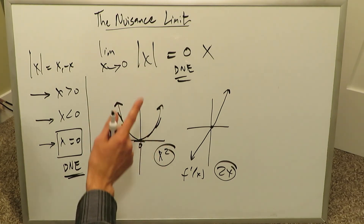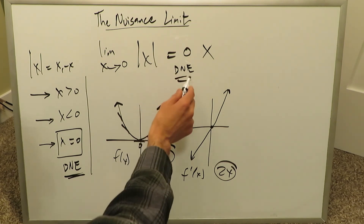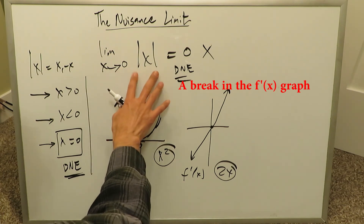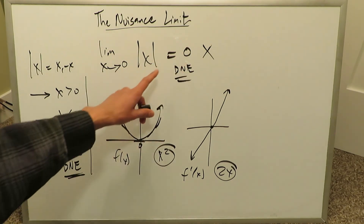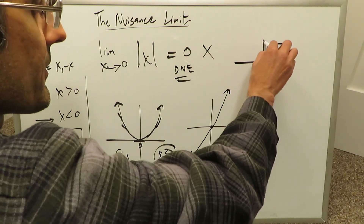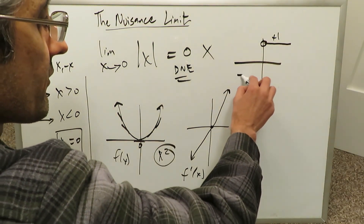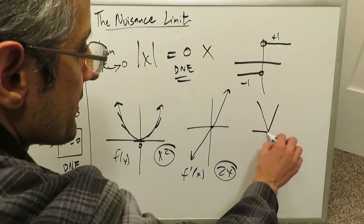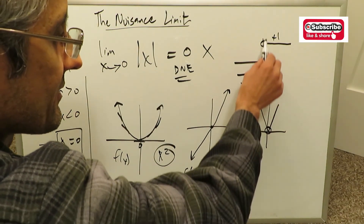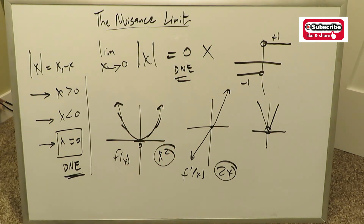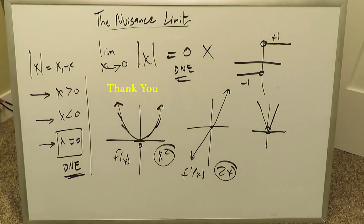Therefore, when you see a question like this — limit as x approaches 0 of absolute value of x — do not put 0 as your answer. The answer is does not exist, because the right-hand and left-hand limits are not the same: coming to 0 from the right you get positive 1, coming from the left you get minus 1, and there's a break. That break represents the corner in the absolute value function, which manifests as a break at x equals 0. At x equals 0, the limit does not exist — and that should be your answer. Thank you for watching, have a nice day.